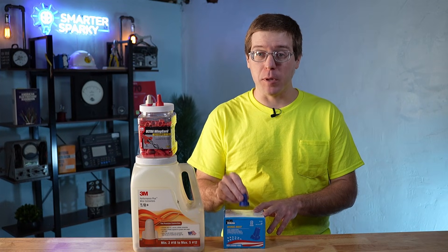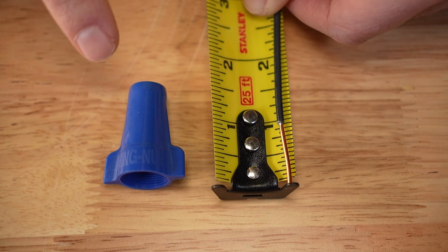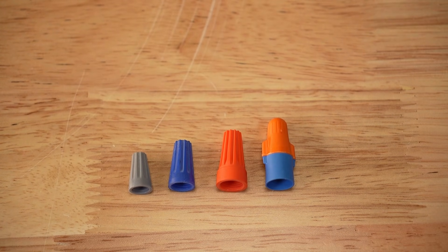For larger wire nuts like this big blue, the manufacturer recommends 7 eighths of an inch of insulation stripped out. Naturally, smaller wire nuts are going to require a shorter strip length.